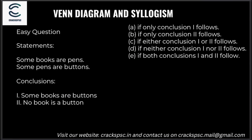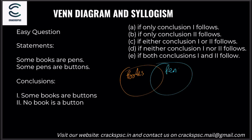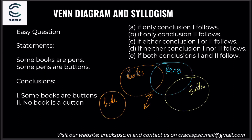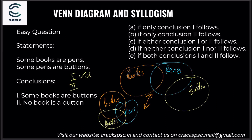Another question — easy one. Some books are pens, some pens are buttons. Draw it out: books and pens overlap, pens and buttons overlap. Due to the duality of existence, it could be drawn this way also — same concept. Conclusion one: some books are buttons. Conclusion two: no book is a button. Let's write it out with tick and cross.